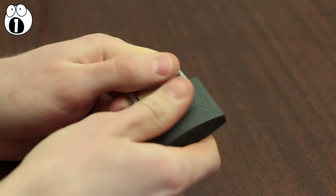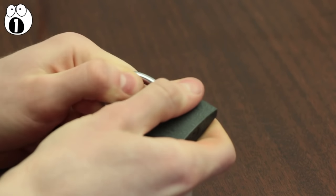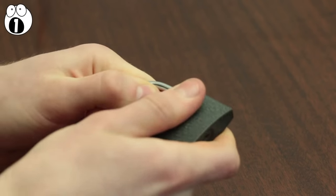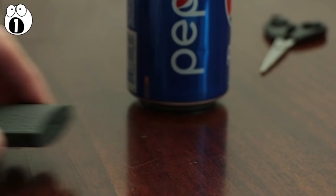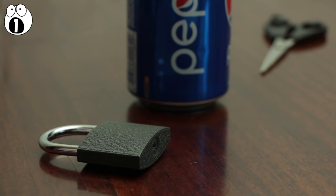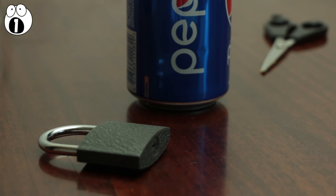If you really need to open a padlock or you're just trying to impress people in the pub and don't have any keys, there is a relatively simple way to do it. All you need is a little know-how about how padlocks work, a soda can and some scissors.